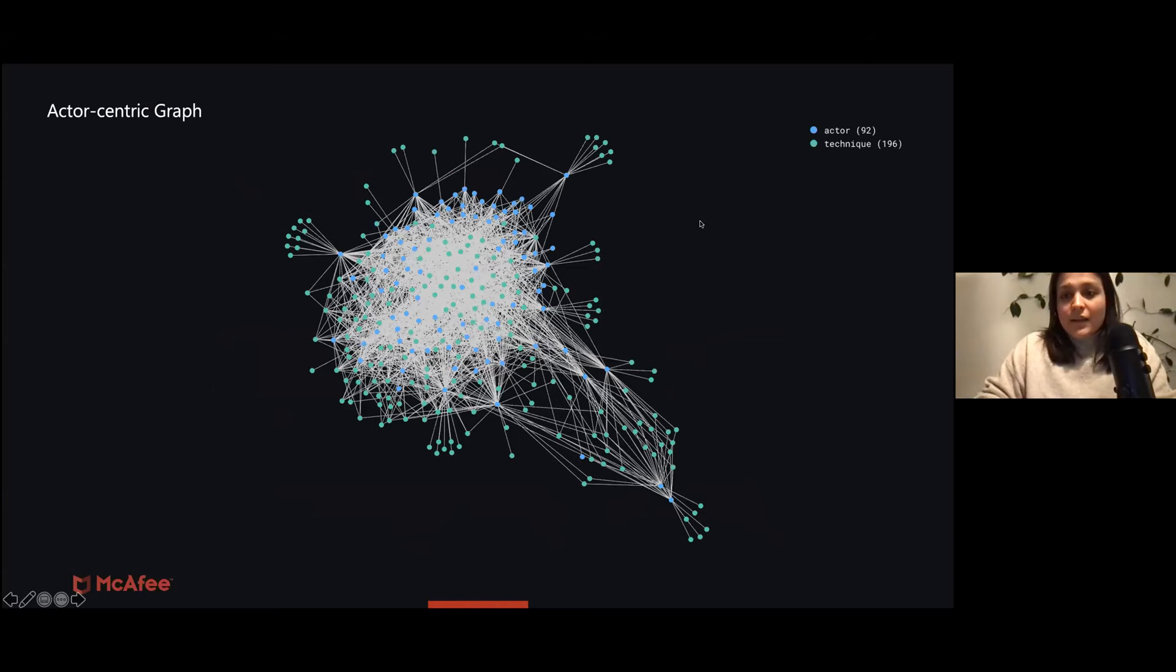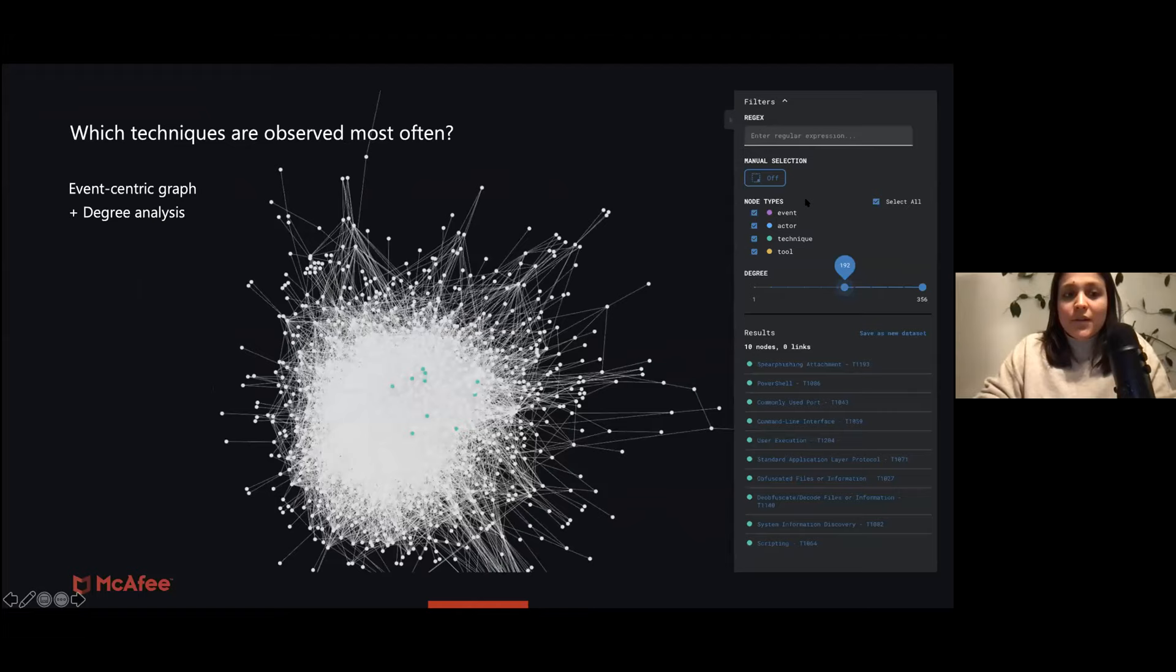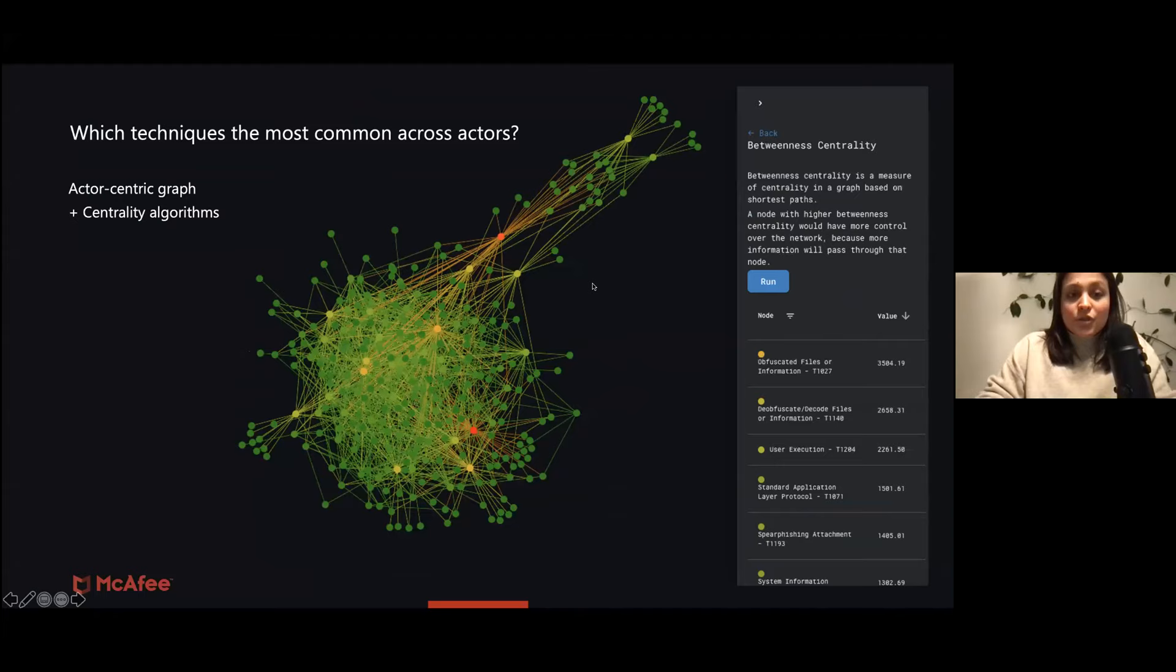To answer the question, which techniques are observed most often, one way to answer this question is to look at degree analysis. So degree analysis is just looking at nodes that are directly connected to one node. An event node or a technique node that is connected to a whole bunch of events is basically the most popular technique. In order to answer this question about which techniques are the most common across actors, then we need to look at the actor-centric graphs for the behavior of these actors. We use centrality algorithm on an actor node, and then we look at the MITRE techniques that are most connected to it. And then we have, for example, in this case, it was obfuscated files or information. This is the most used technique across actors, based on the data that we have.